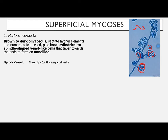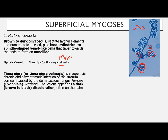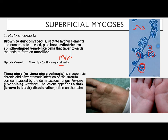The mycosis caused by Hortaea werneckii is tinea nigra, also known as tinea nigra palmaris. Tinea nigra palmaris is a superficial, chronic, and asymptomatic infection of the stratum corneum caused by the dematiaceous fungi Hortaea werneckii or Exophiala werneckii. The lesions appear as dark brown to black discoloration, often on the palm.